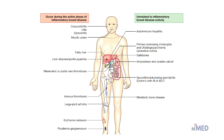Rash, pyoderma gangrenosum, erythema nodosum, eye inflammation, and arthritis are common to both conditions. That's the overview of inflammatory bowel disease — if you learned something new, please subscribe and hit the like button, and comment below if you'd like to learn about any other topic in detail.